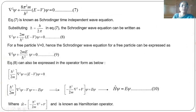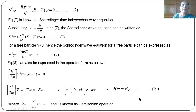I hope you have understood how to derive the Schrödinger time independent wave equation. We have Ĥ ψ equal to E ψ. There is no time factor here, which is why we call this the time independent wave equation. Thank you all.